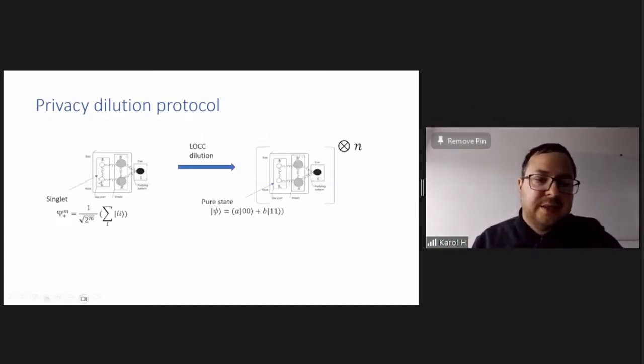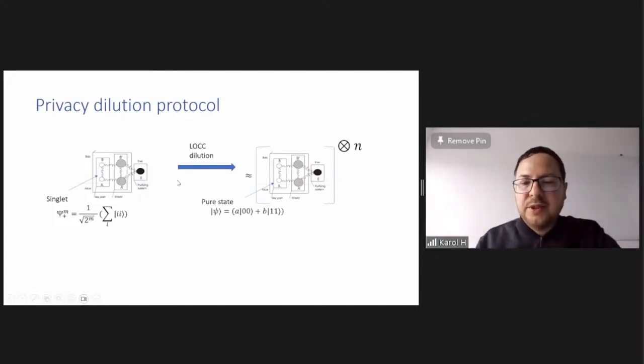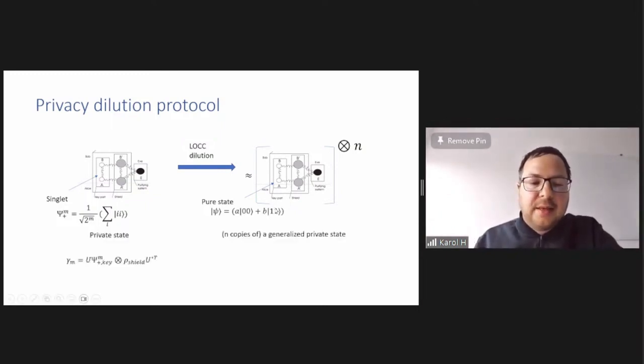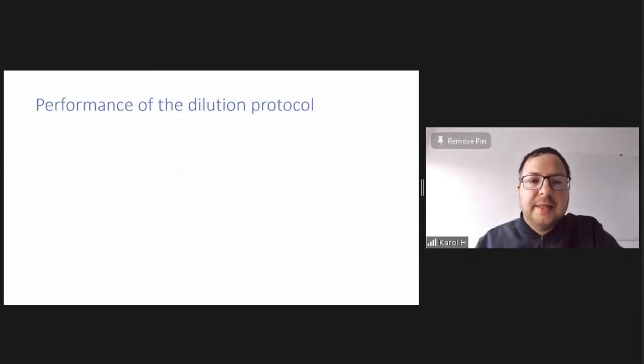So what is this private dilution protocol? Just visualization, you have on the left-hand side, you have a private state that is twisted singlet. And by LOCC, you want to transform it into approximate n copies of twisted pure state. Now, pure state has this coefficients a, zero, zero, and a, and b. And so, again, this form of gamma-private state is a twisted singlet by some unitary. And here we have n copies of twisted psi state, again, with some twisting on it, and maybe different shielding system. So this is our task.